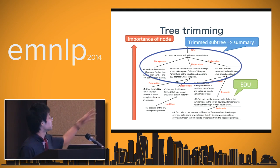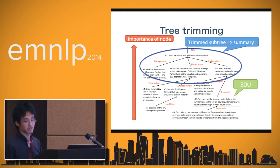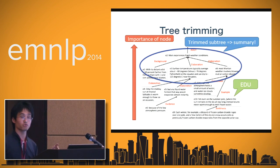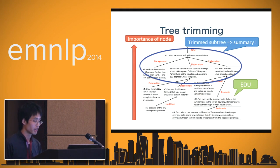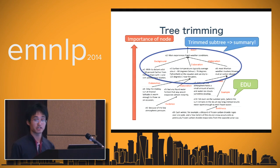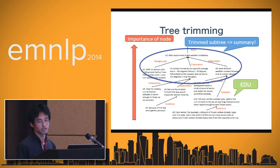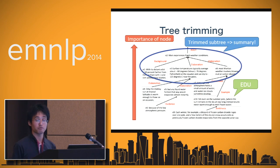In Hirao's method, this is a dependency-based discourse tree, and the document is represented as this kind of tree. In this tree, each node represents Elementary Discourse Units, EDUs, which roughly correspond to a clause or sentence. There is an edge between each pair of EDUs, and each edge has a rhetorical label such as elaboration, background, or example. In this presentation, we call this tree DEP-DT. To obtain a summary, we trim a subtree from this DEP-DT — the blue circle part — and the EDUs contained in the subtree make a summary.